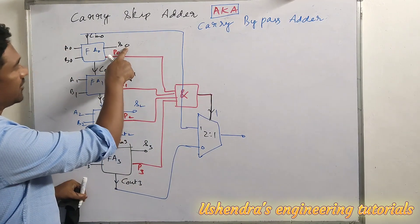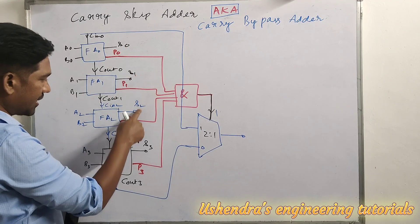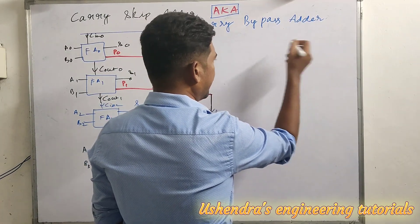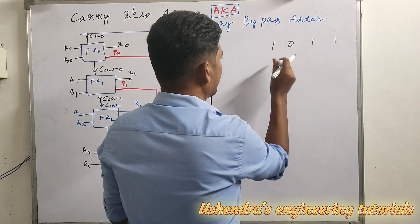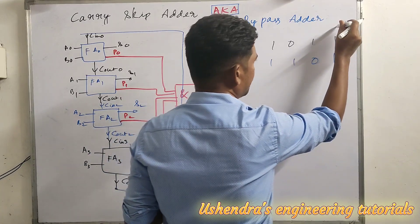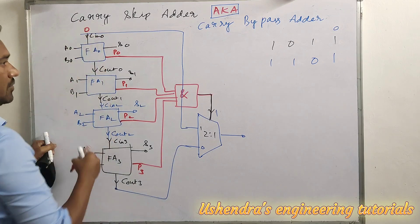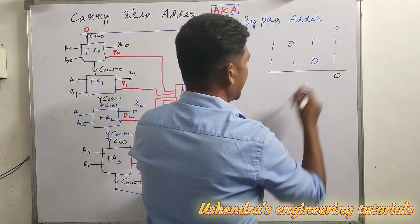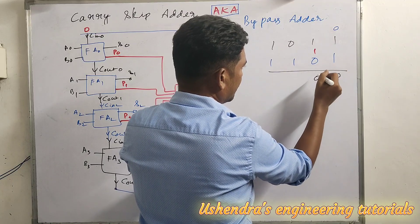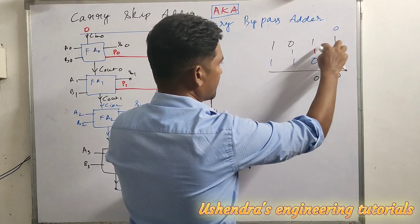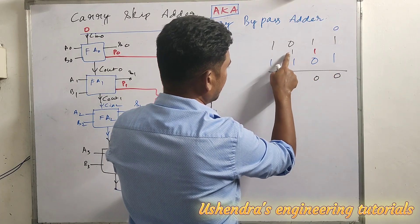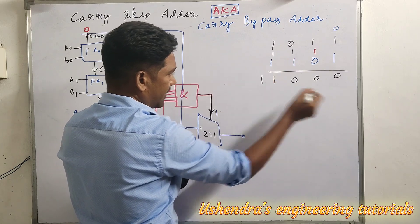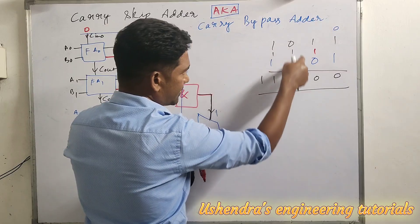The sums are taken from the full adder outputs, but the final carry out comes from the MUX output. Considering a random 4-bit addition: let the inputs be 1011 and 1101, with previous carry in Cin being zero. Adding these: one plus one gives sum zero, carry one; one plus one gives sum zero, carry one; zero plus one plus one gives sum zero, carry one; and one plus one plus one gives sum one, carry one.